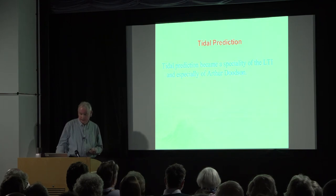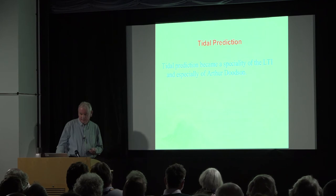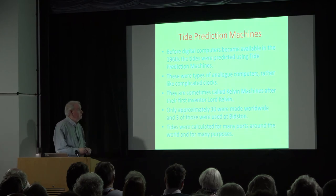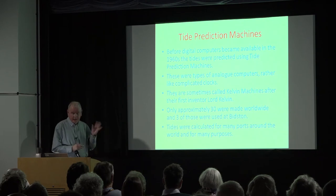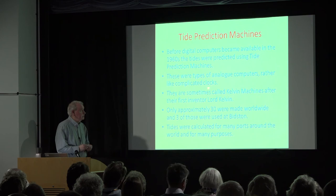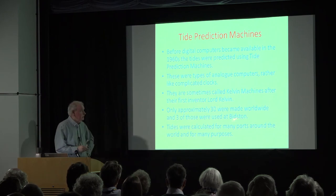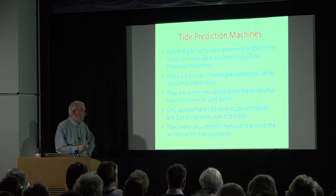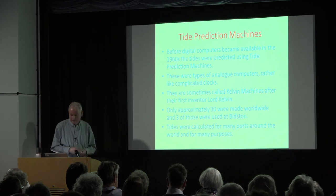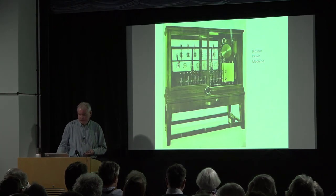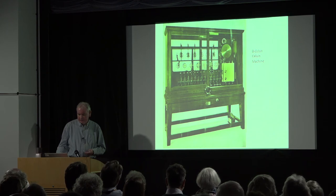Tidal prediction was a speciality of Arthur Doodson. He was responsible for tidal prediction machines, which predicted the tide in the days before computers. They're sometimes called Kelvin machines and look rather like big, complicated clocks — named after their inventor Lord Kelvin. About 30 were ever made, and three were at Bidston. Tides were calculated for many ports around the world for many years. One of the three machines at Bidston — the so-called Kelvin machine — is now in the French Hydrographic Office.